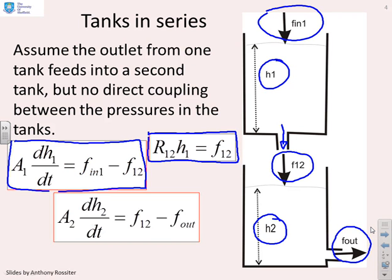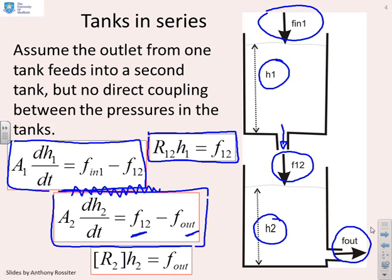What about tank 2 then? Well, for tank 2, we're going to get the same sort of model. We're going to get A2 dh2/dt equals f12 minus f out. So f12 being the flow into tank 2 and f out the flow out of tank 2. And you'll notice these two models here have identical structures. But there's one final bit we need to add. That's what's the flow out of tank 2. And there it is at the bottom, R2 h2 is the flow out of tank 2. So all in all, we've got four equations which represent these tanks in series.